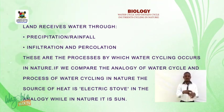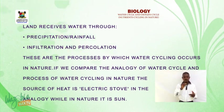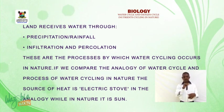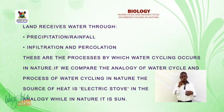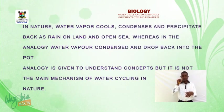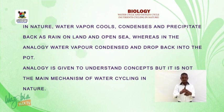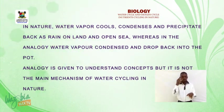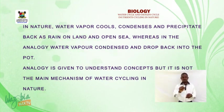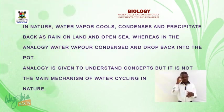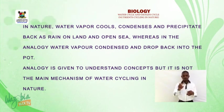Comparing the analogy with the process of water cycling in nature: the source of heat is the electric stove in the analogy, while in nature it is the sun. In nature, water vapor cools, condenses, and precipitates back as rain on land and open sea, whereas in the analogy water vapor condenses and drops back into the pot. The analogy helps to understand concepts but is not the main mechanism of water cycling.